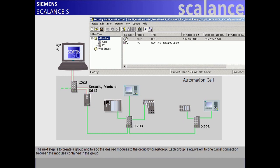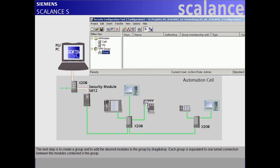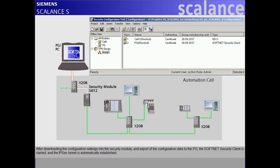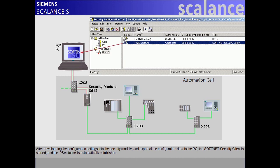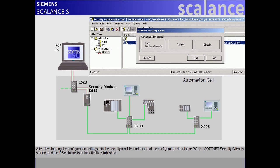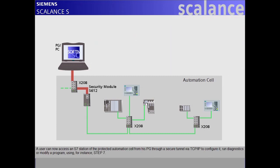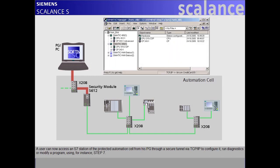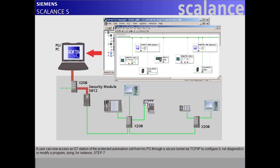The next step is to create a group and to add the desired modules to the group by drag and drop. Each group is equivalent to one tunnel connection between the modules contained in the group. After downloading the configuration settings into the security module and exporting the configuration data to the PG, the SoftNet Security Client is started and the IPsec tunnel is automatically established. A user can now access an S7 station of the protected automation cell from his PG through a secure tunnel via TCP/IP to configure it, run diagnostics, or modify a program using, for instance, Step 7.